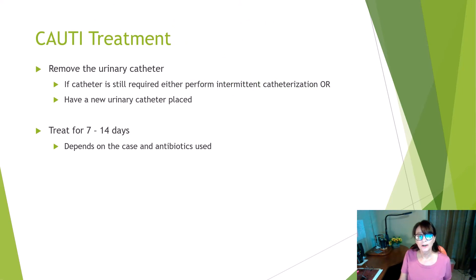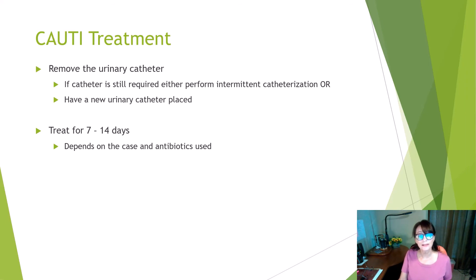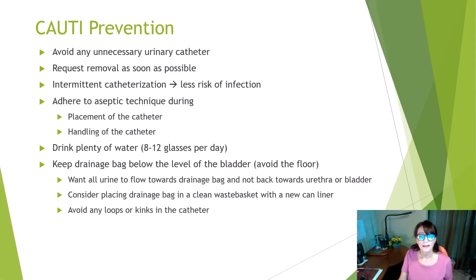For treatment of a CAUTI, remove the catheter, because bacteria are growing on it. If a catheter is still required, either perform intermittent catheterization or have a new urinary catheter placed. Treatment duration is somewhere around 7 to 14 days, depending on the case and the antibiotics used.